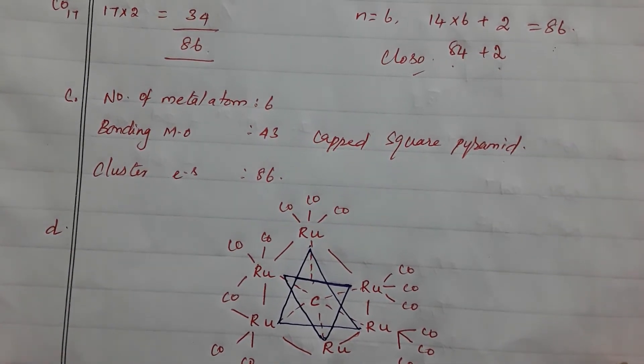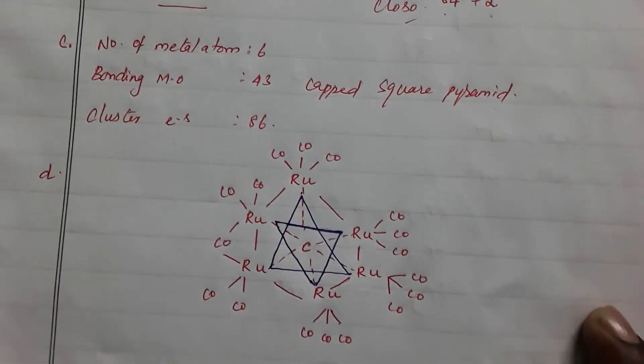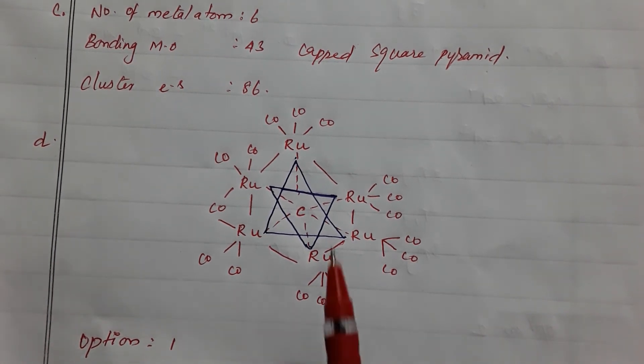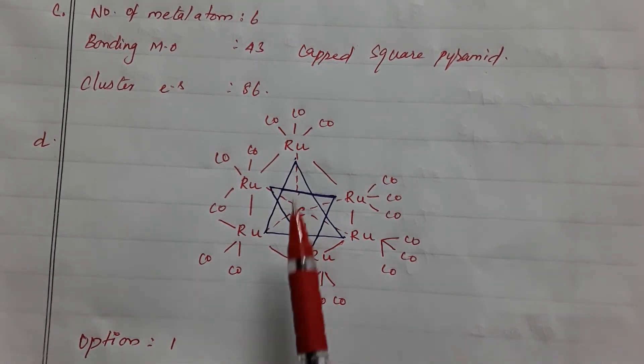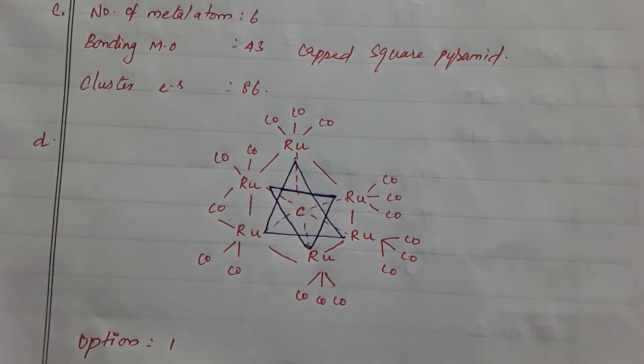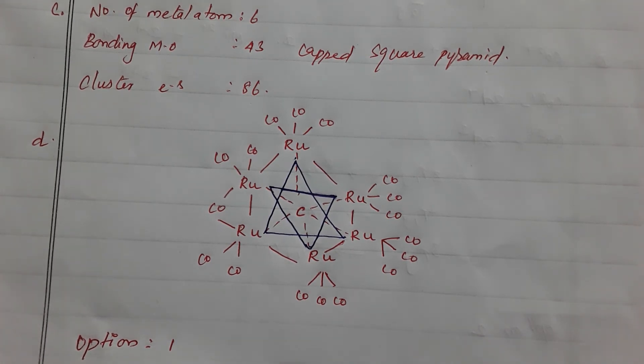And the last one, the carbon interacts with all 6 ruthenium atoms. This is the structure of the ruthenium cluster. See that the central carbon atom interacts with all 6 ruthenium atoms. So option D is also correct.